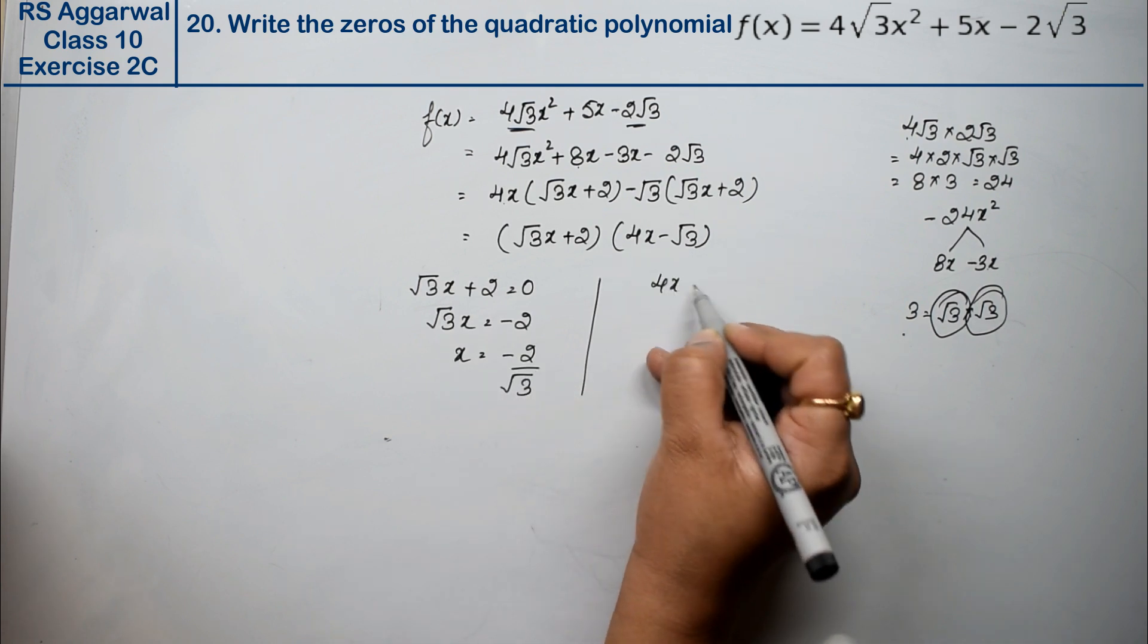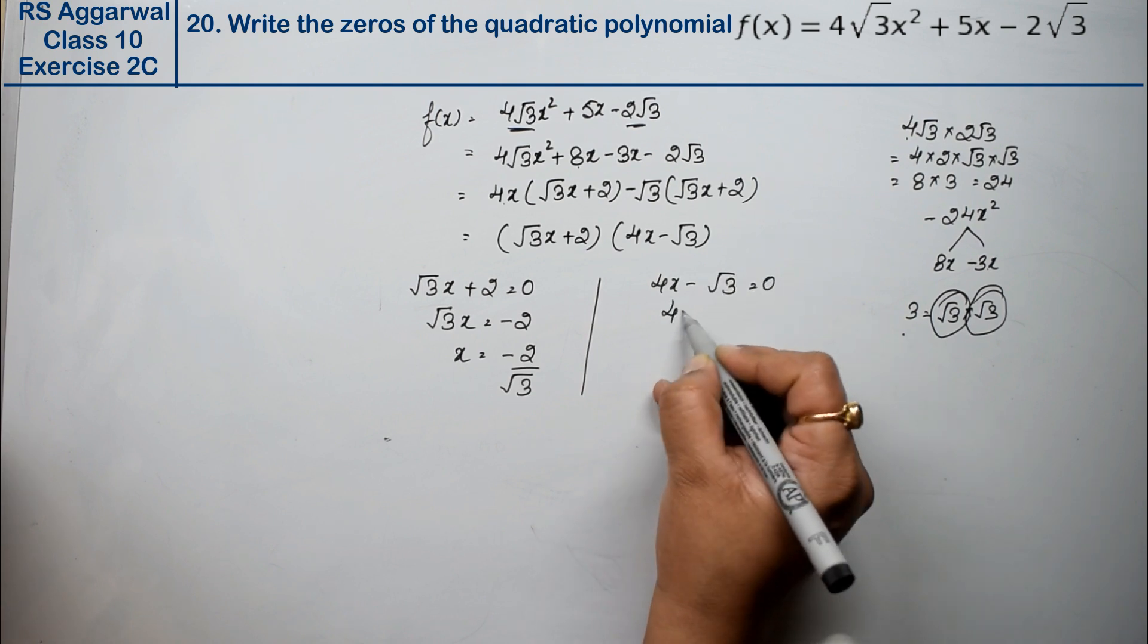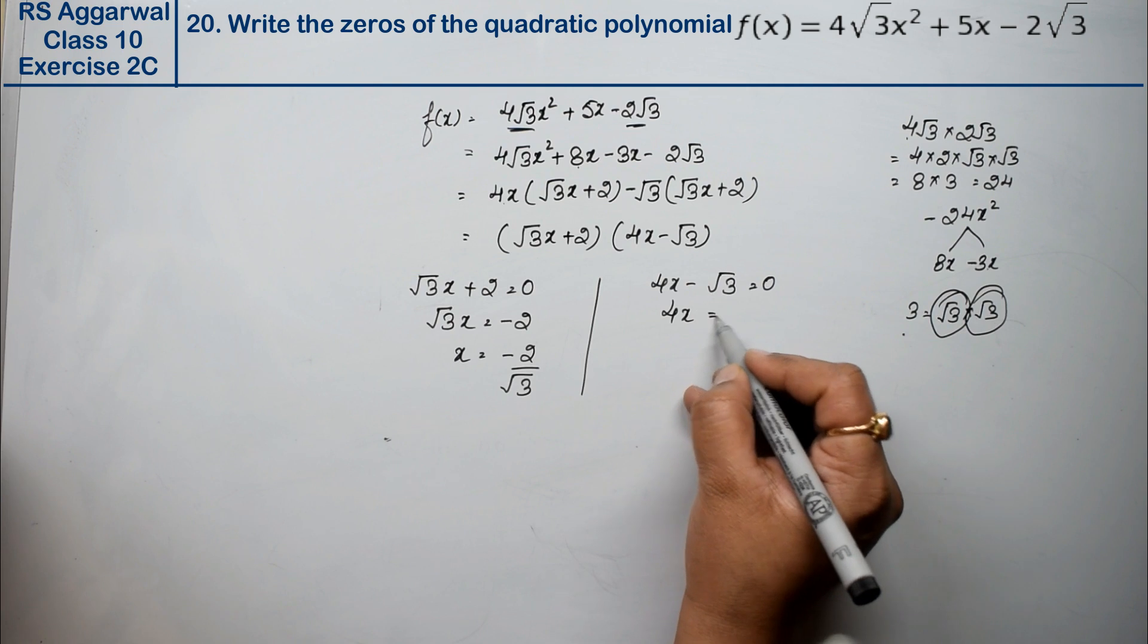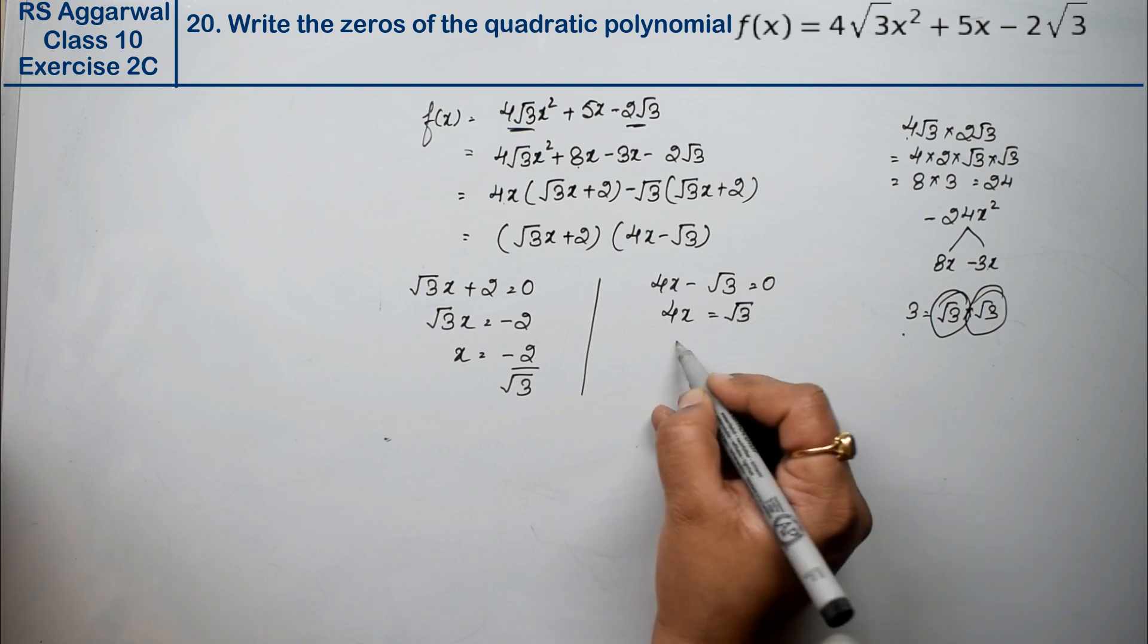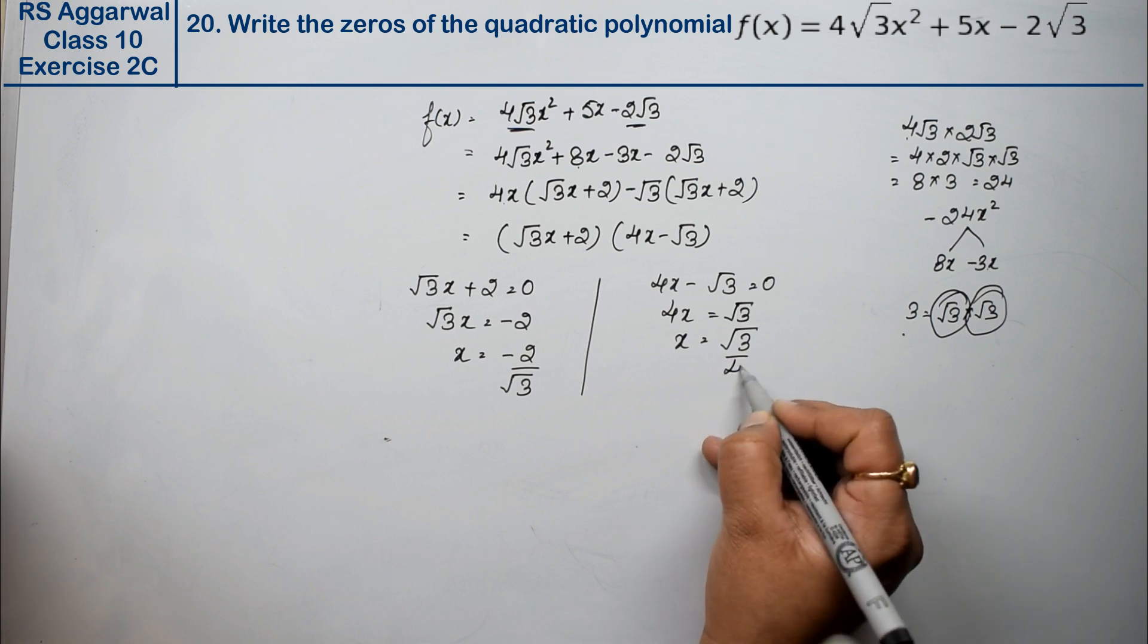Similarly, 4x - √3 = 0. Setting it equal to zero, the value of 4x becomes positive. So the value of x is √3/4.